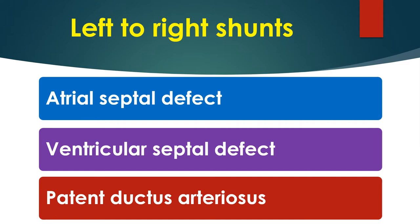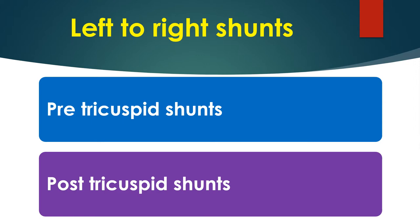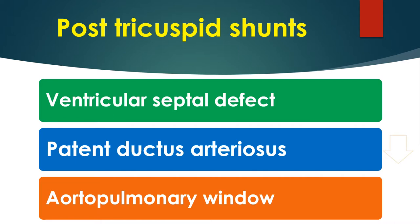Left to right shunts include atrial septal defect, ventricular septal defect, patent ductus arteriosus, and aortopulmonary window. One person can have more than one of these shunts. Large left to right shunts can induce pulmonary hypertension and lead to reversal of shunt, resulting in cyanosis — called Eisenmenger syndrome. Left to right shunts are subdivided into pre-tricuspid and post-tricuspid. Pre-tricuspid shunts are atrial septal defects and partial anomalous pulmonary venous drainage. Post-tricuspid shunts include VSD, patent ductus arteriosus, and aortopulmonary window, of which aortopulmonary window has the highest chance of early pulmonary hypertension and Eisenmenger reaction.